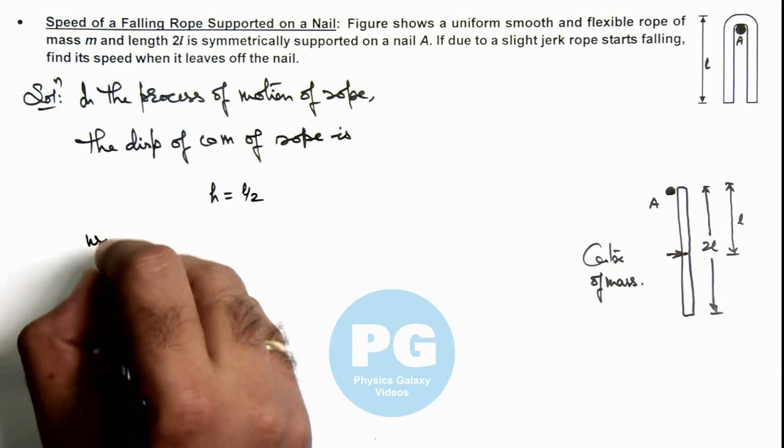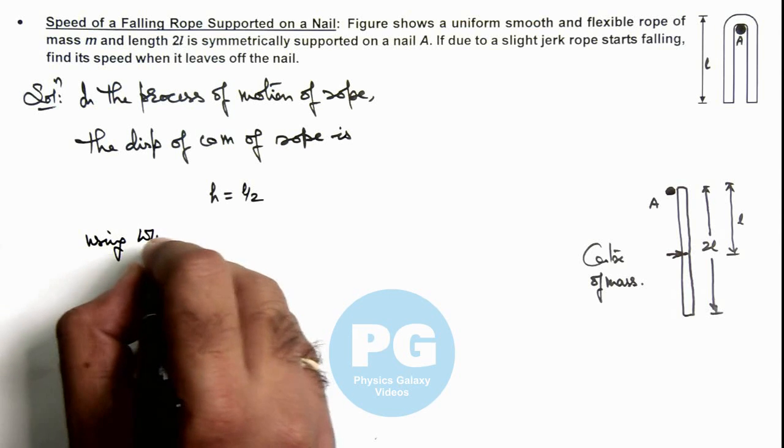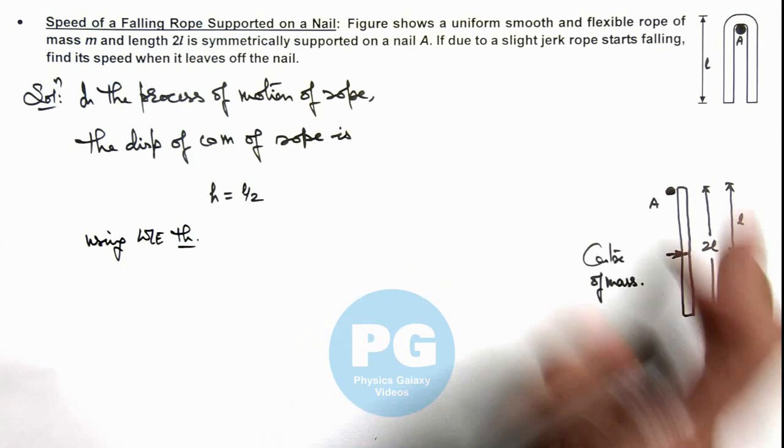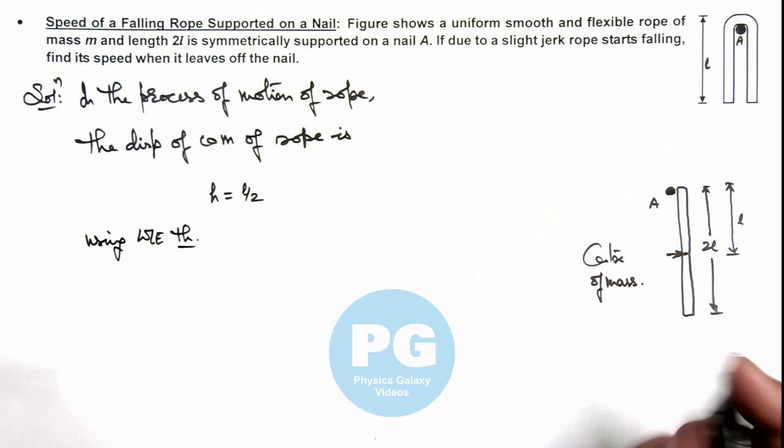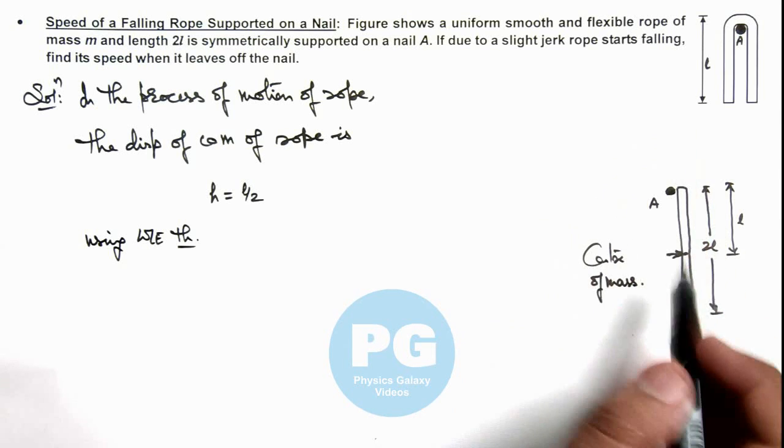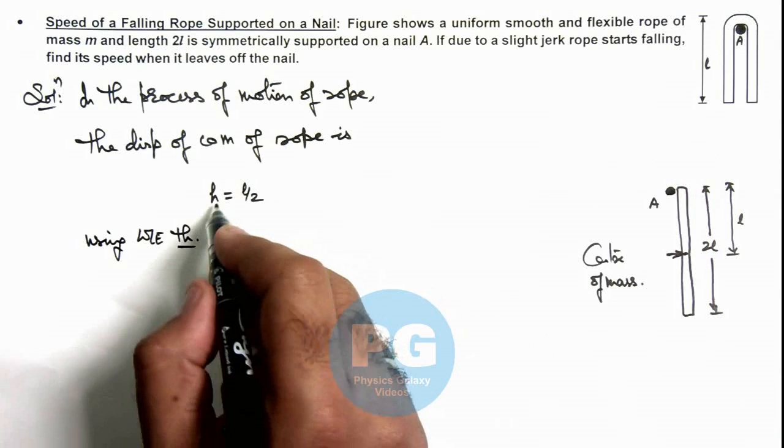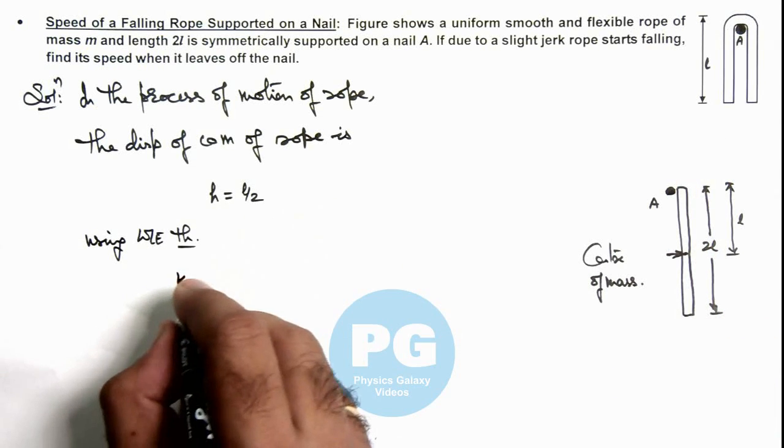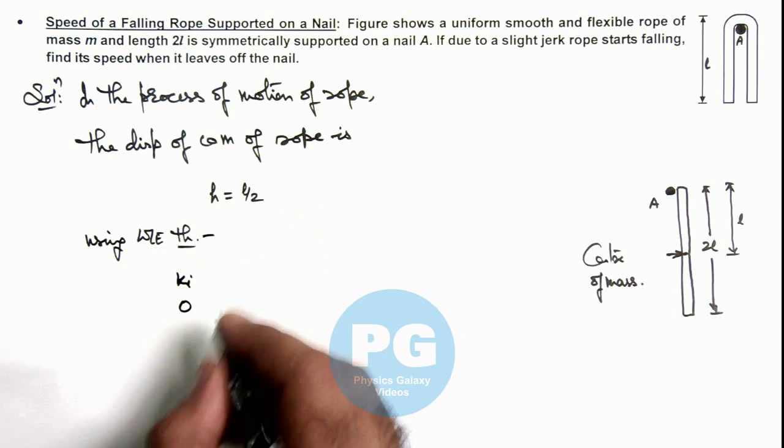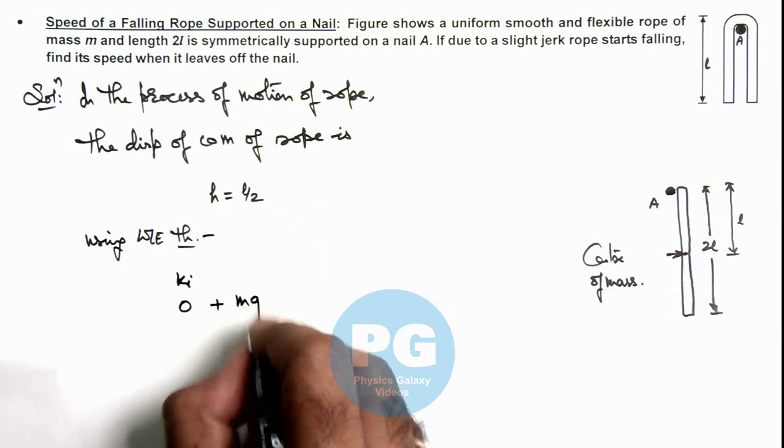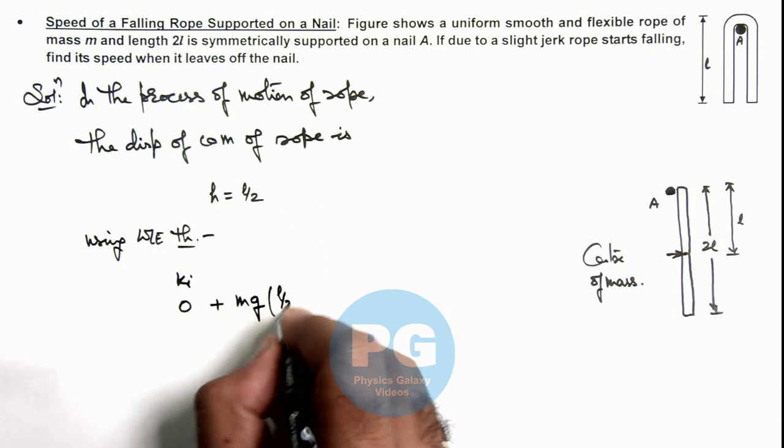So we can directly write using the work-energy theorem. As g is uniform, we can consider the work done by gravity on the rope in the process of motion will be mgh. The initial kinetic energy of the rope was zero, plus the work done on it is mg(l/2).